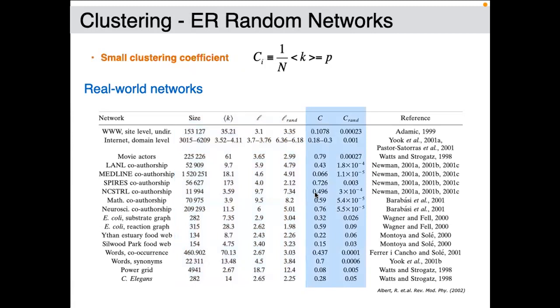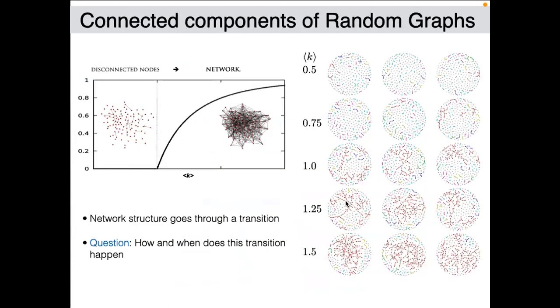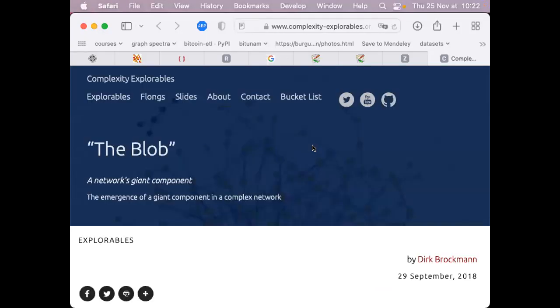For the clustering coefficient it's different: in real data you have pretty large values, while the random graph has a much smaller clustering coefficient in most cases. This is the key difference between a random graph and real graphs. You also saw the emergence of a giant component when you reach an average degree of one. To add to the class, you can test this empirically — I put a link on my slides to a page where you can experiment with this yourself.